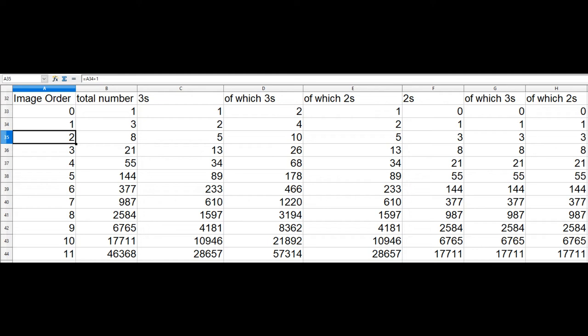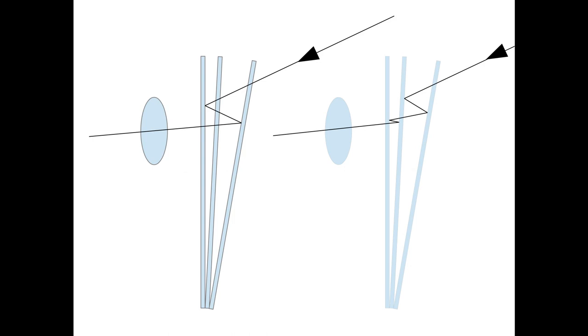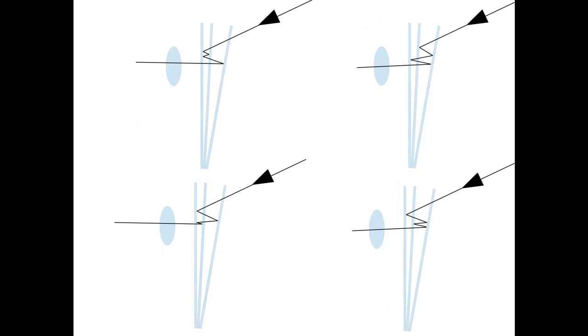There is another complication which is that many of these images will be copies by having the same angular deviation as other images. So for example, this second-order virtual image has the same angle as this first-order image, and these are two pairs of second-order images that have the same angles as each other, which means that you get five unique images in the second order, and when there are multiple paths to the same image it will appear brighter.